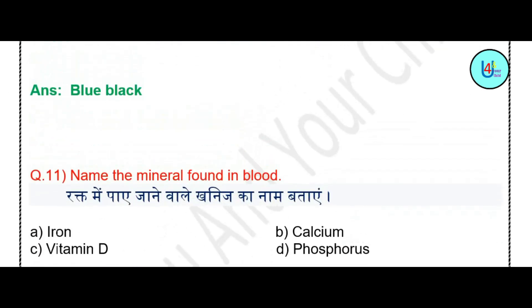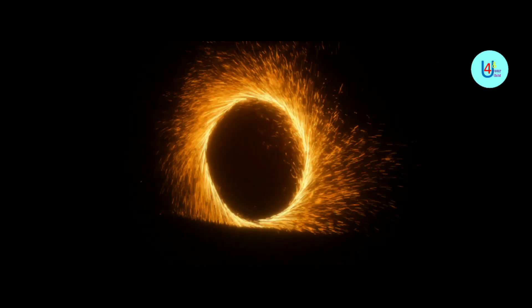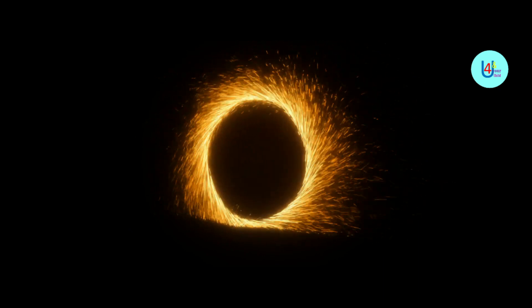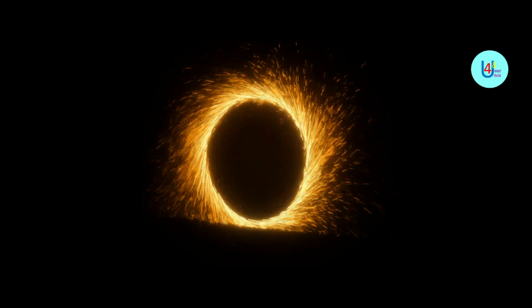Question number 11: Name the mineral found in blood — iron, calcium, Vitamin D, or phosphorus? The correct answer to this question should be written in the comment section. I hope this video was helpful. I will see you in the next video. Thank you so much for watching!